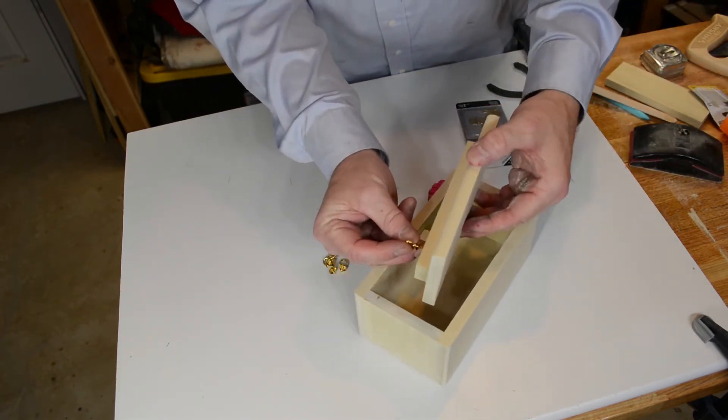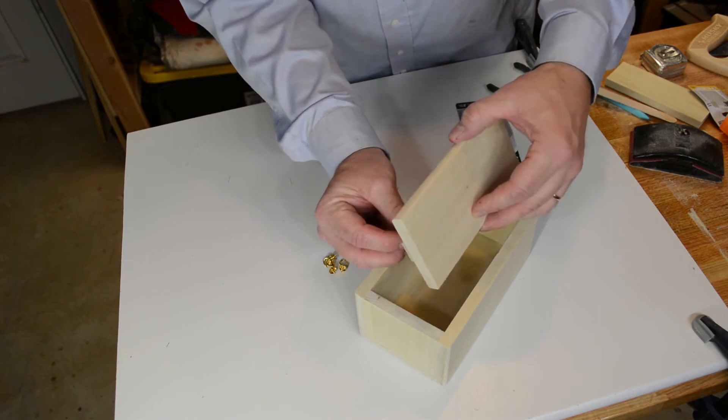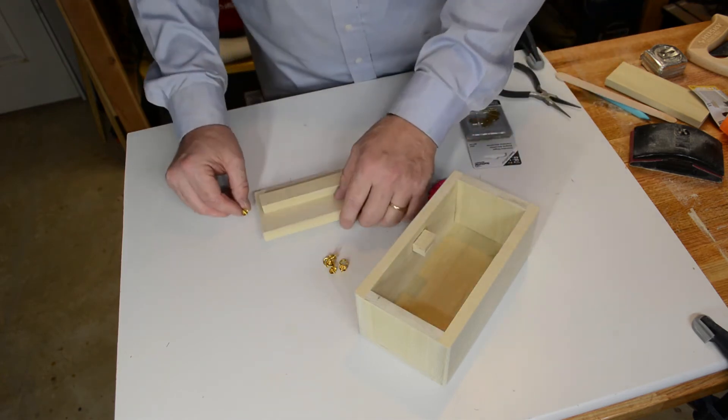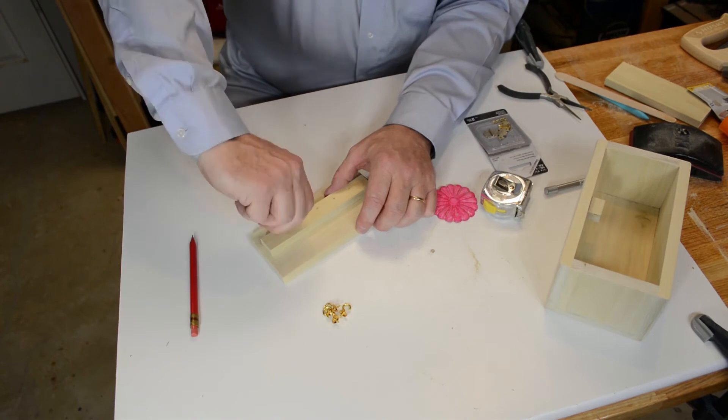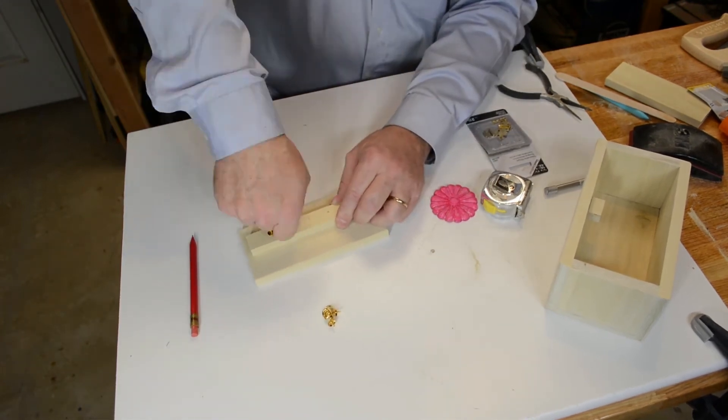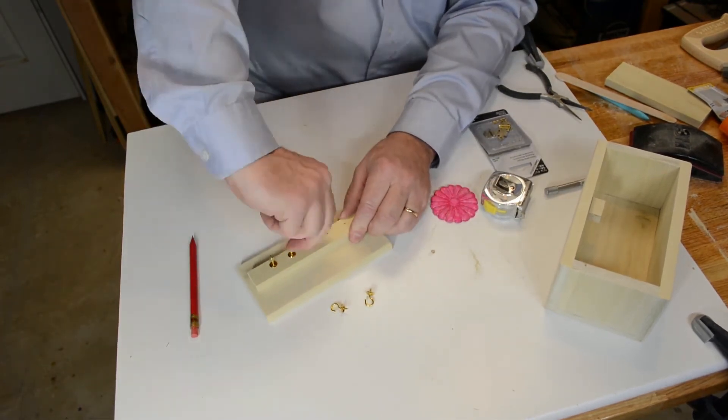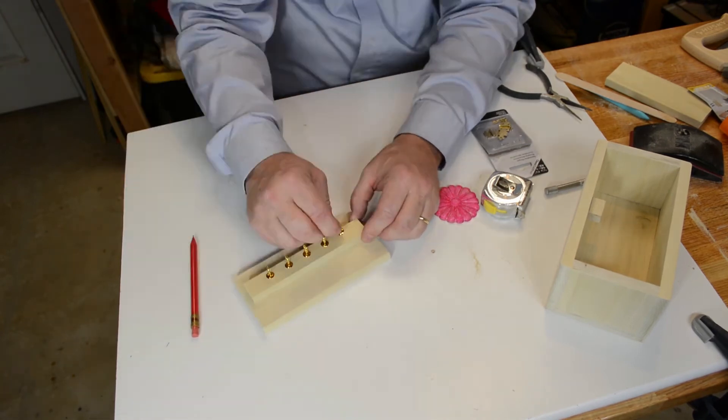And as you close the cover down, it'll take those chains and drop them into the box. So I've got five little cup hooks. I measured them out so that they're equally spaced and putting them on the underside of the top.